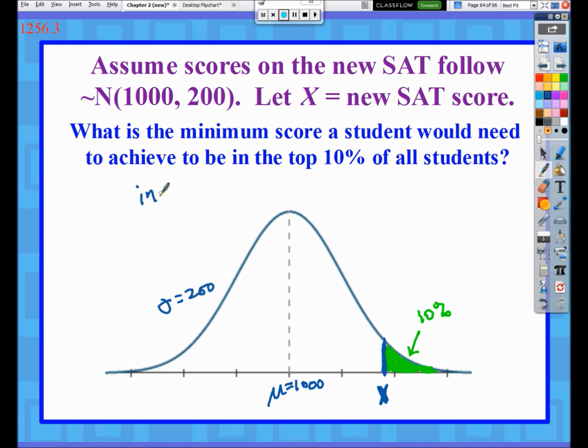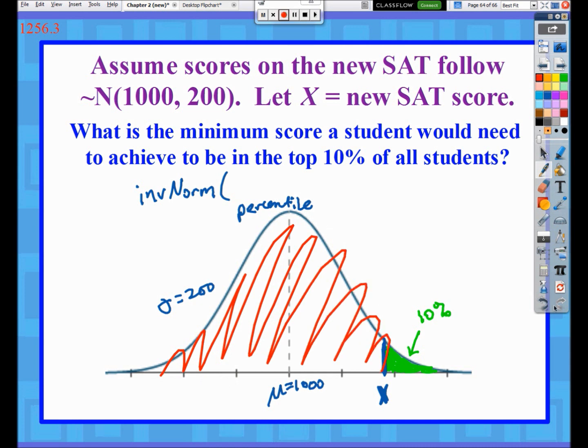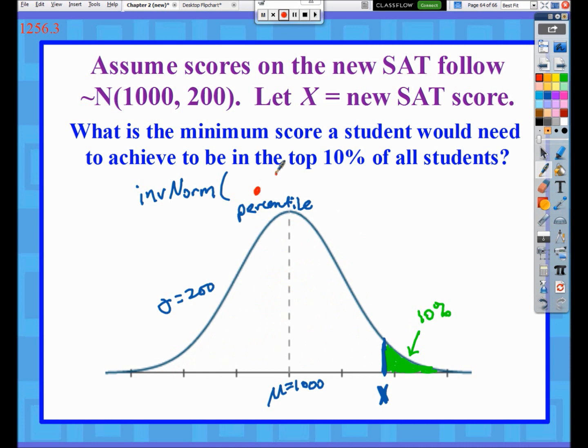My calculator command, inverse norm - first we need to put in the percentile. But in this case we're not in the 10th percentile. If you're in the top 10%, what percent of values are below you? That would be the 90th percentile. So we're going to put in 0.9 for the 90th percentile.